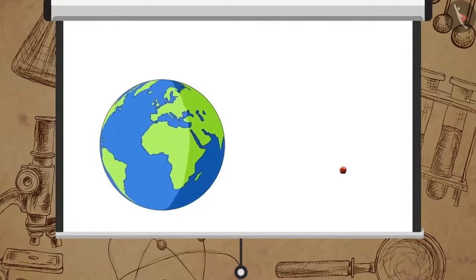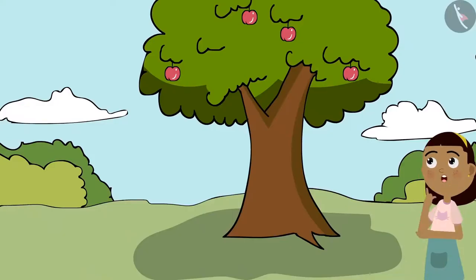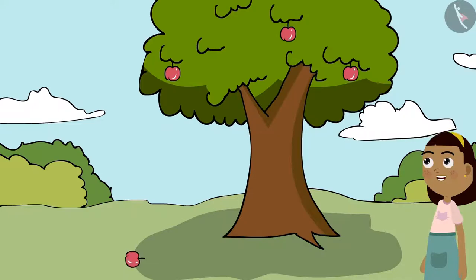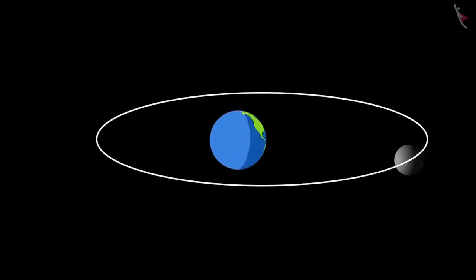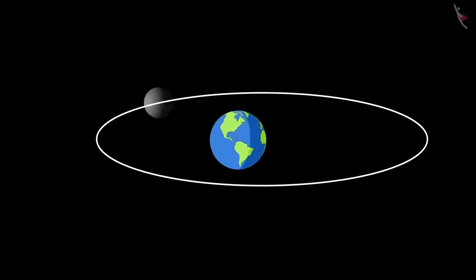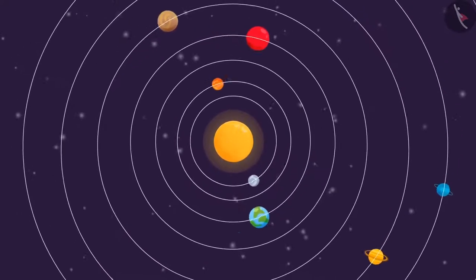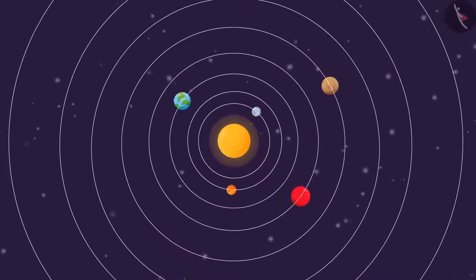The mass of an apple is negligible compared to the mass of the earth. Because of this reason, although they both attract each other with the same amount of force, the acceleration of the earth is much less compared to the acceleration of the apple. It is because of this same reason that we do not see the earth moving towards the moon. All the planets revolve around the sun, as a similar force exists between them.